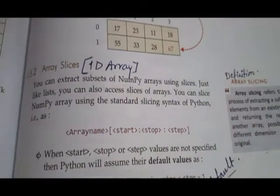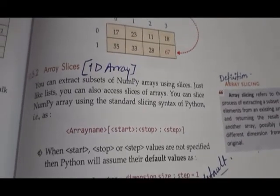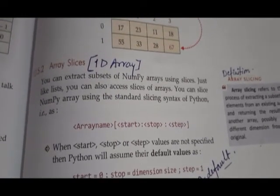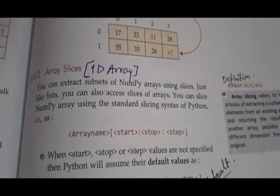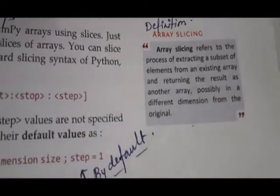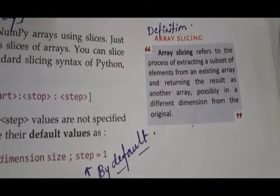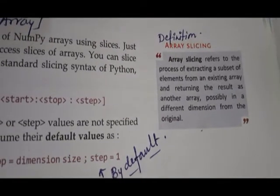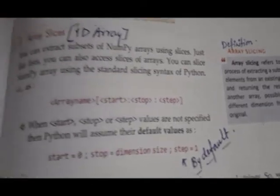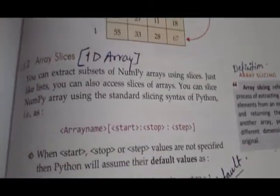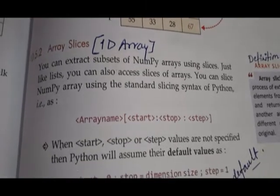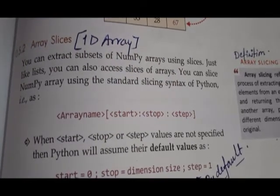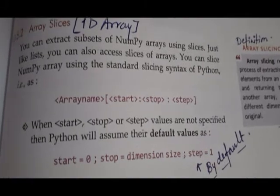Now, dear students, the way we found slices of other data types, same way we will be finding array slices. First, 1D array slices. Array slicing refers to the process of extracting a subset of elements from an existing array and returning the result as another array, possibly in a different dimension from the original. The syntax is: array_name[start:stop:step]. Start is by default 0, stop is dimension size, and step is 1.